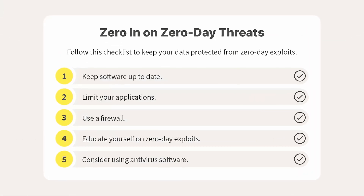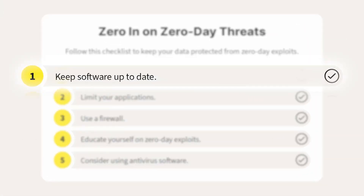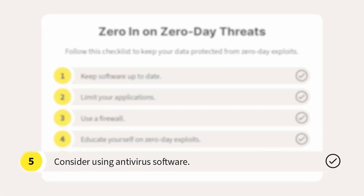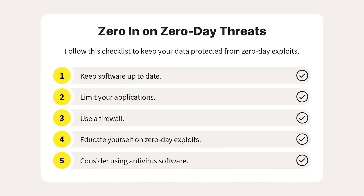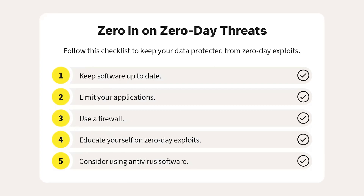How can you protect yourself from zero-day attacks? Protecting yourself requires a proactive and multi-phase approach to cybersecurity. First, keep your software and operating systems up to date, as many zero-day vulnerabilities are fixed by vendors once they become known, and applying these updates can help reduce the risk. Also, using strong and updated antivirus software with features like heuristics and behavioral analysis can help spot suspicious behavior that might suggest a zero-day attack.